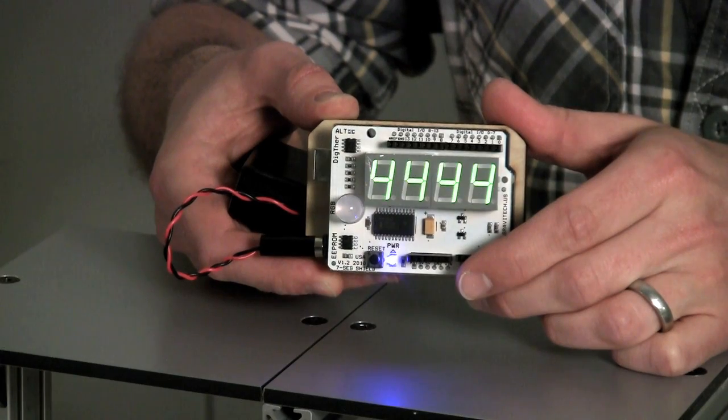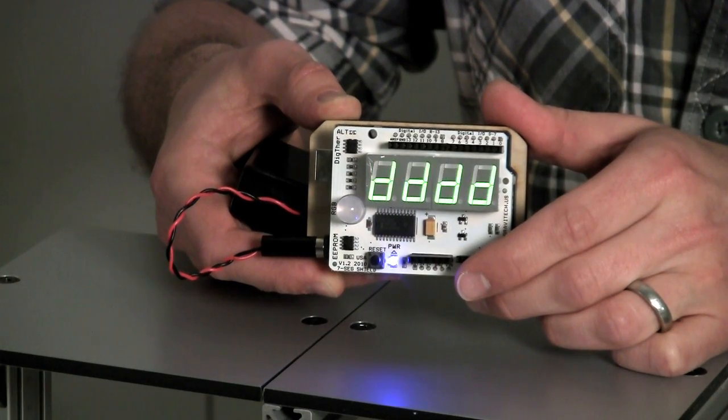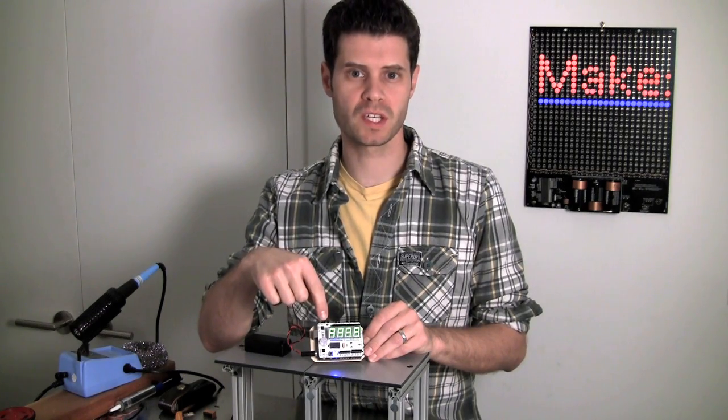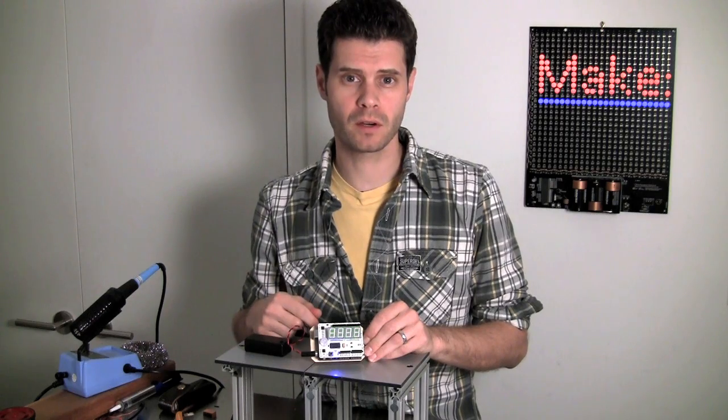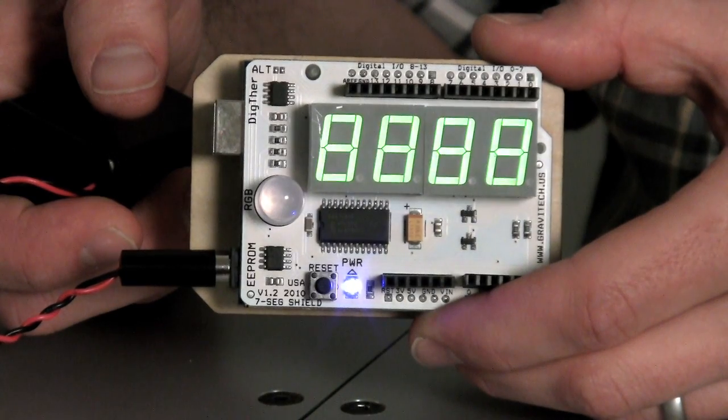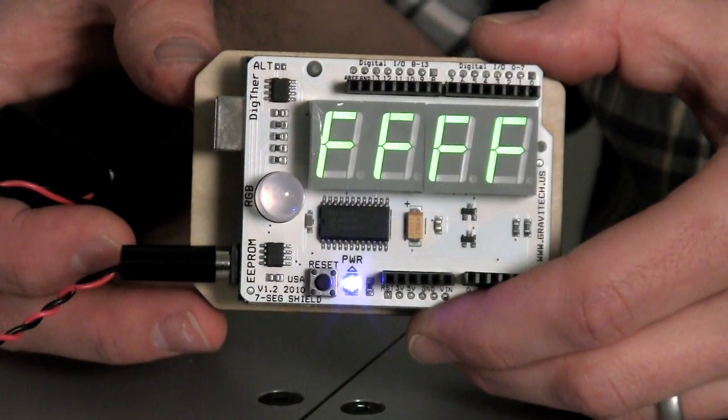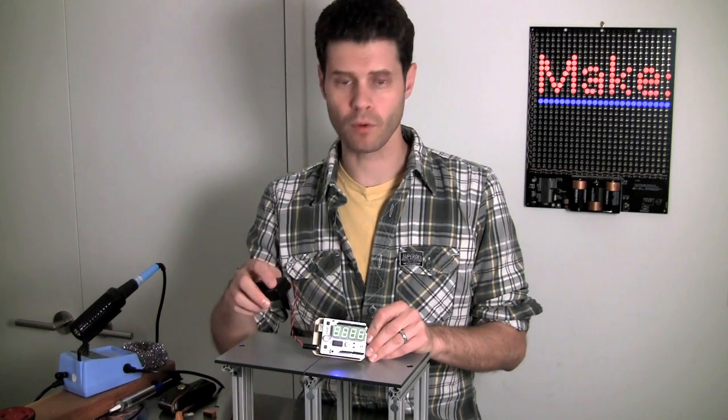As you might have guessed from the name, the seven segment shield is an Arduino shield that has multiple seven segment displays on it. I've got them here counting through some numbers and A through F. This is an Arduino plugged into a 9-volt battery pack.